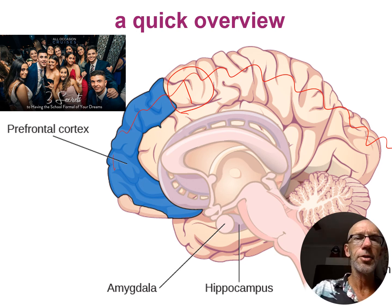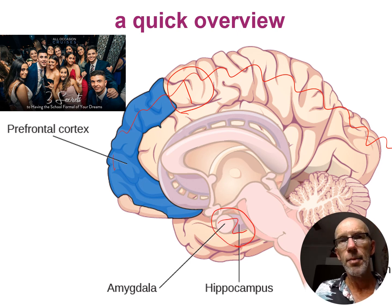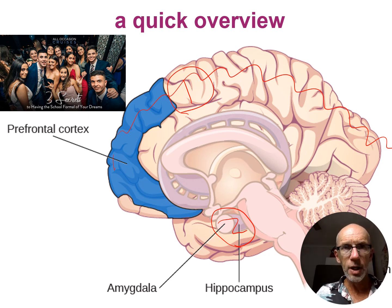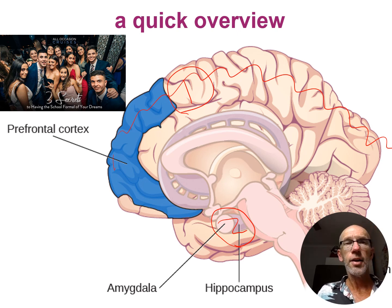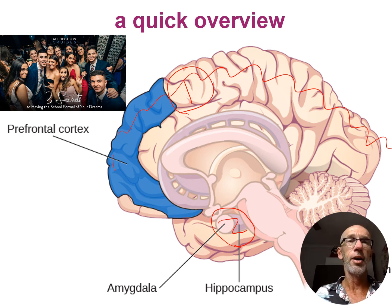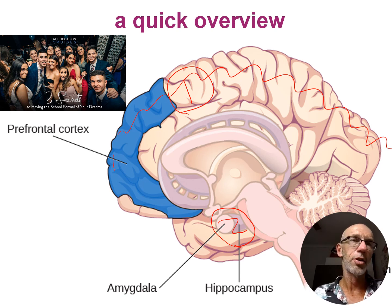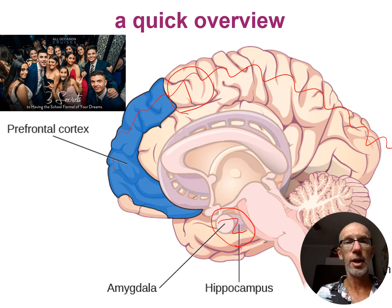Then we move on to phase two, and this is where the hippocampus and the amygdala come into play, because now these two structures are going to be involved in the consolidation process. The hippocampus is going to deal with contextual aspects of the formal — the where and when — and the amygdala is going to be involved in the emotionality of the night. The more intense the emotion, the more active the amygdala is going to be, and the more vivid the recall will be when we retrieve it later on.